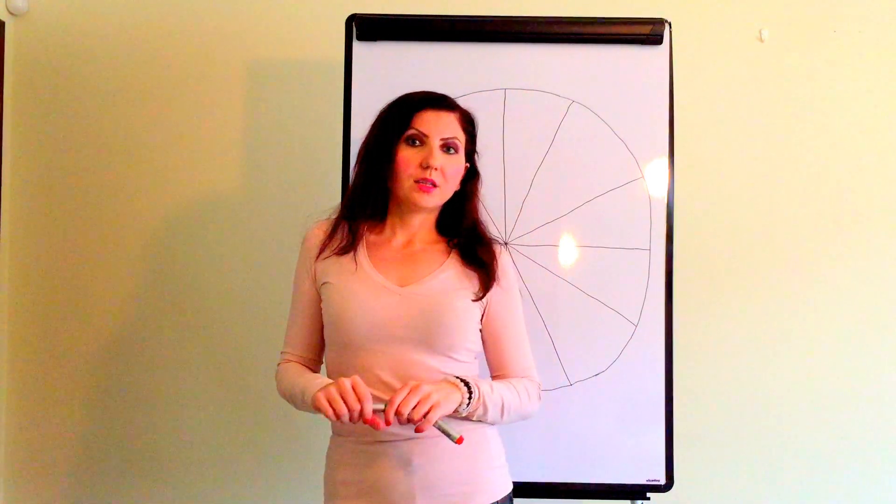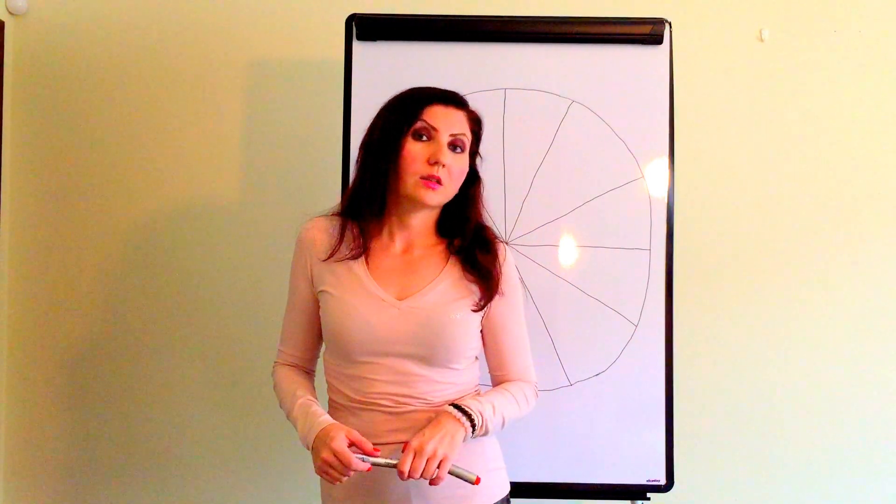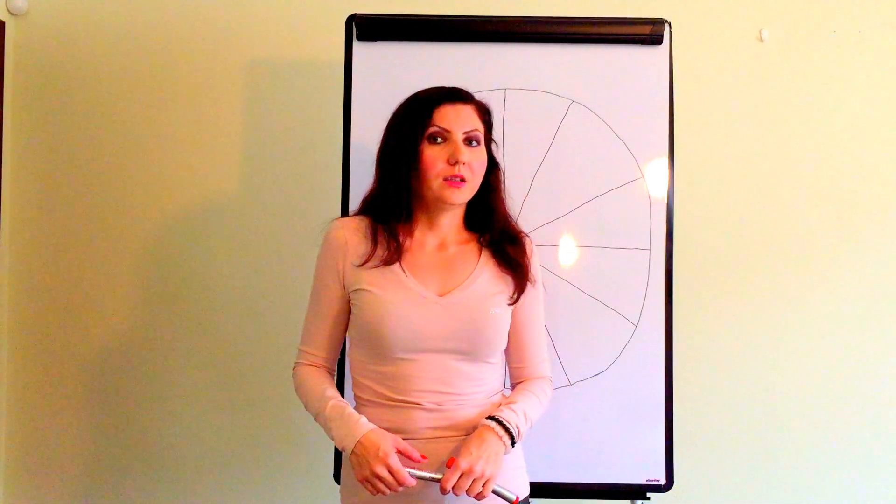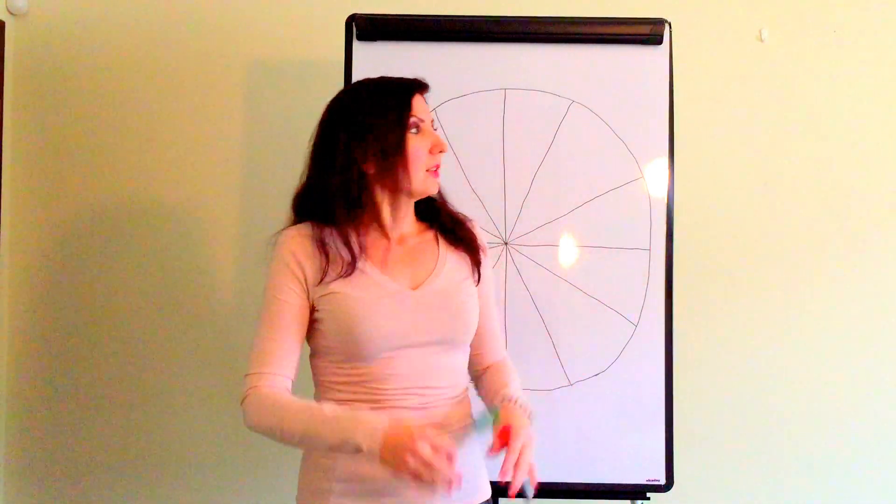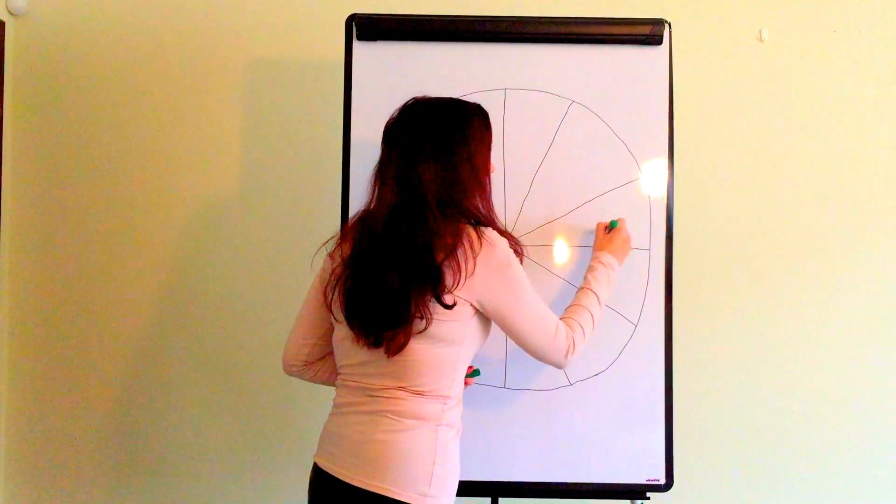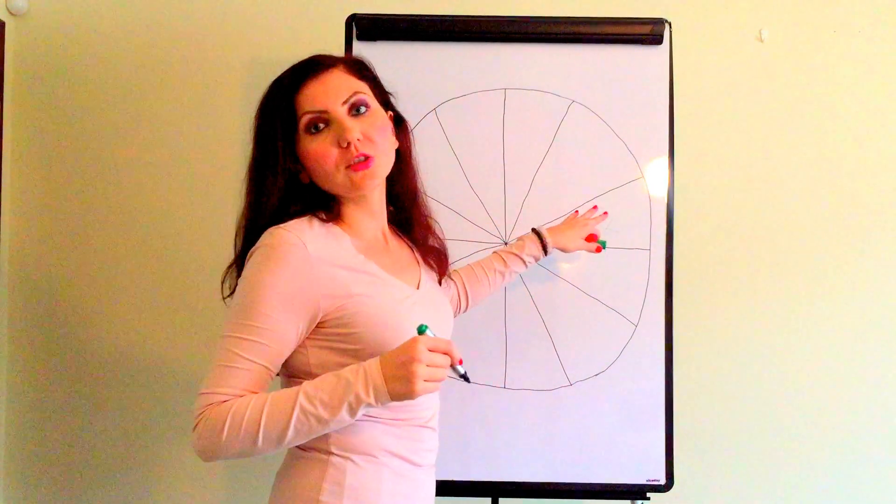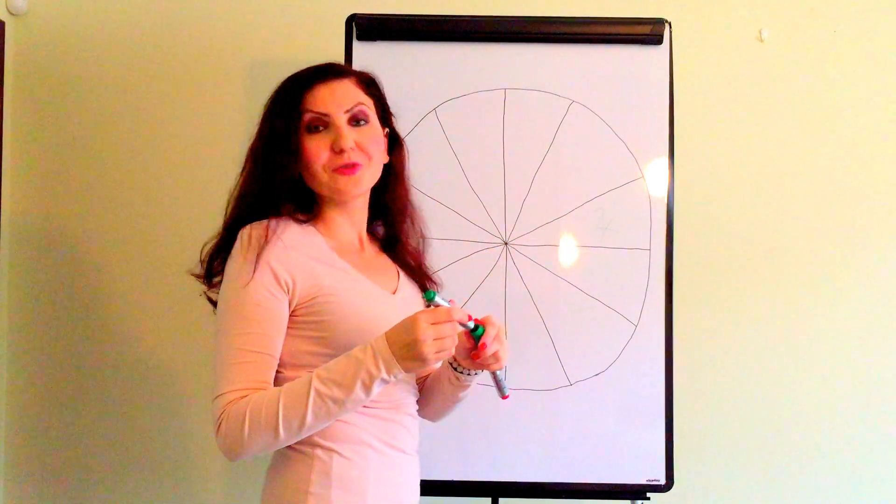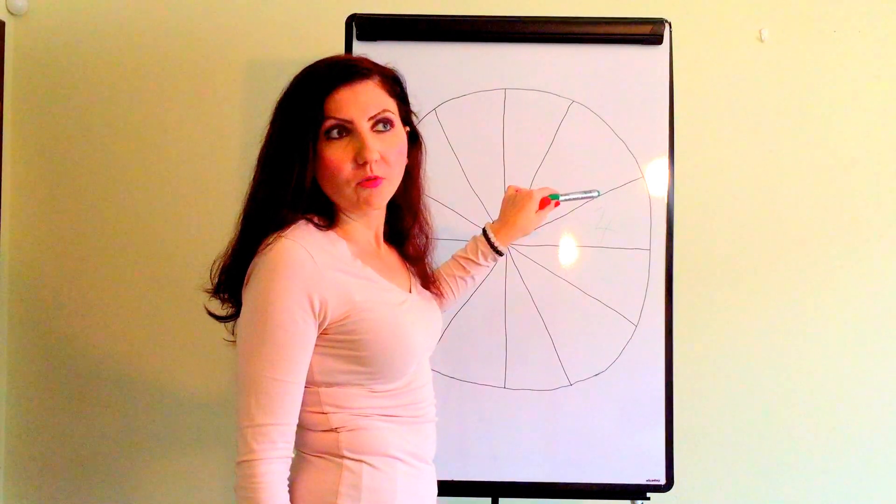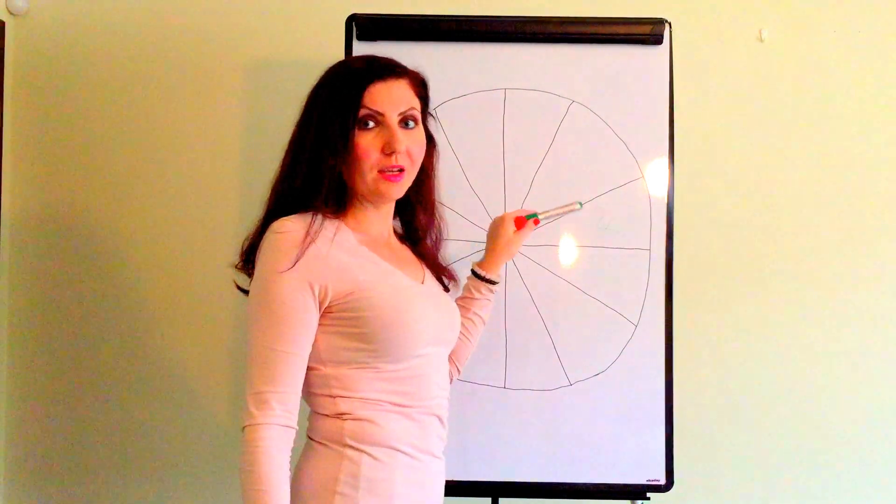For people who are single and were born in the zodiac sign of Aries, you can expect that you will find a new partner. Because as I have said, wherever Jupiter is placed, you will have luck there. So you will actually have luck in finding new love, new romance, because the seventh house is the house of committed relationships.